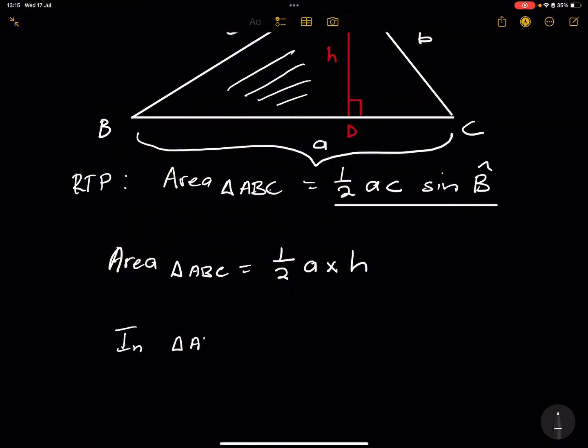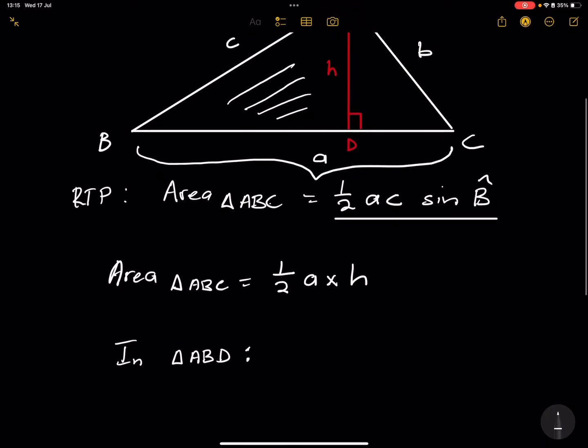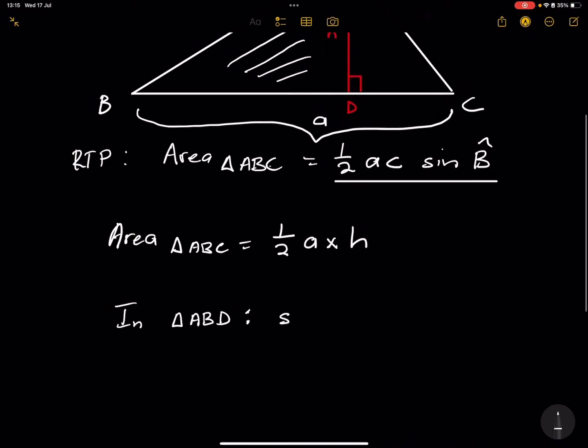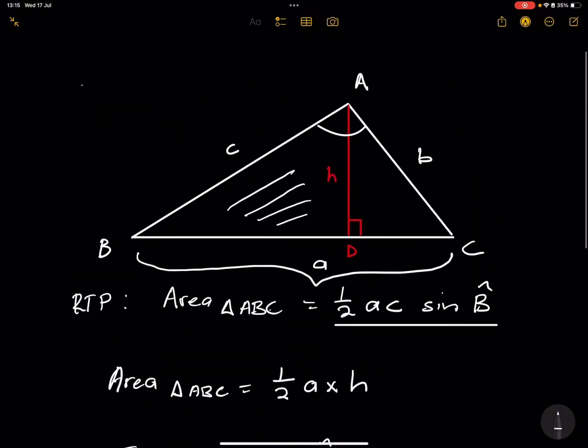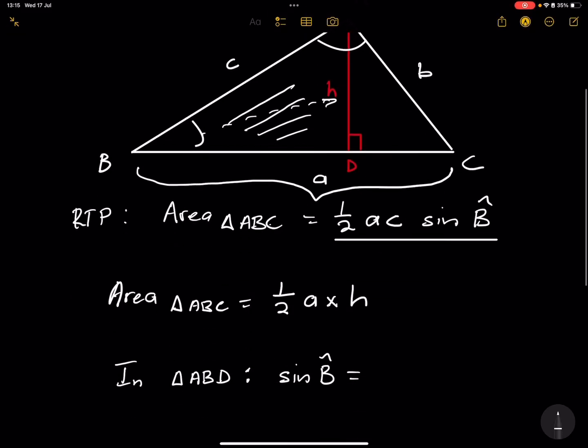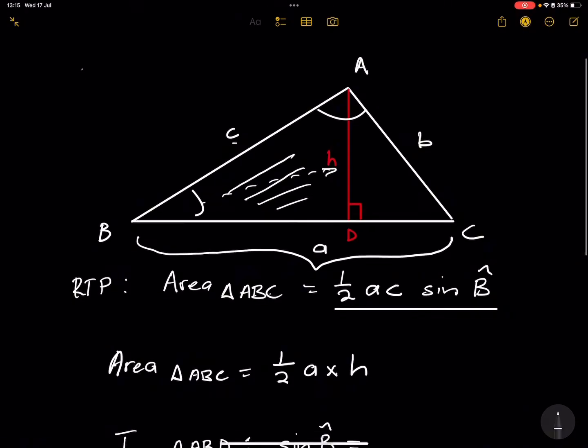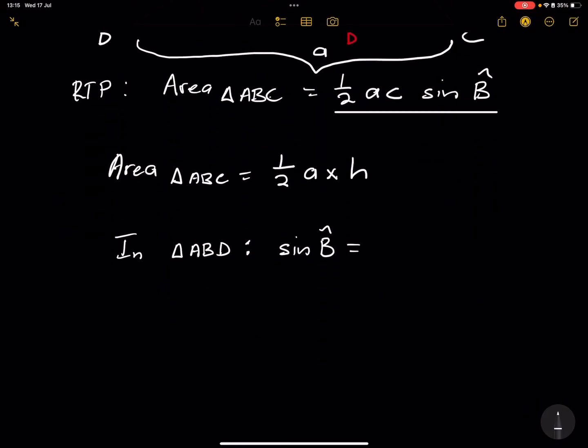The sine of angle B will be equal to, now remember, sine is opposite over the hypotenuse. So the opposite side will be H and the hypotenuse will be C. So I know that sin B will be H over C. That's opposite over hypotenuse.